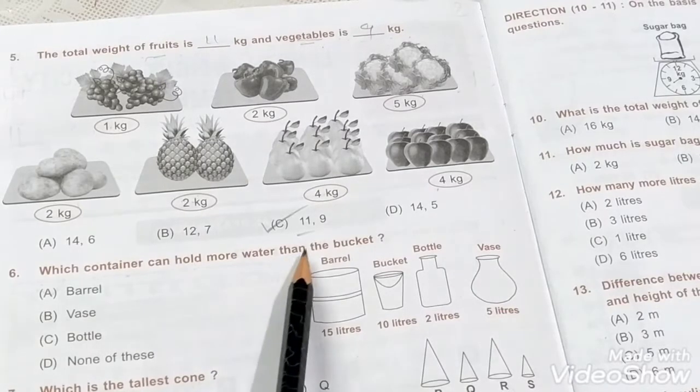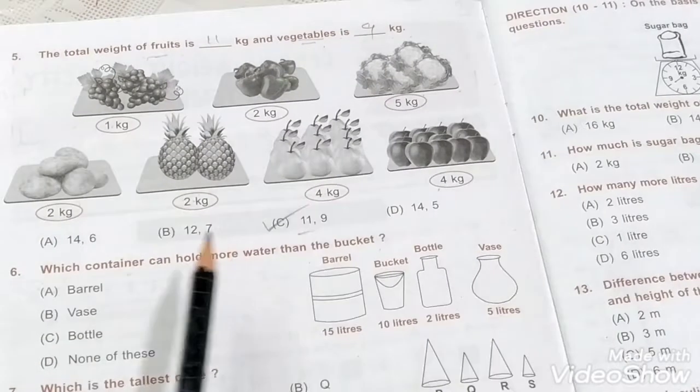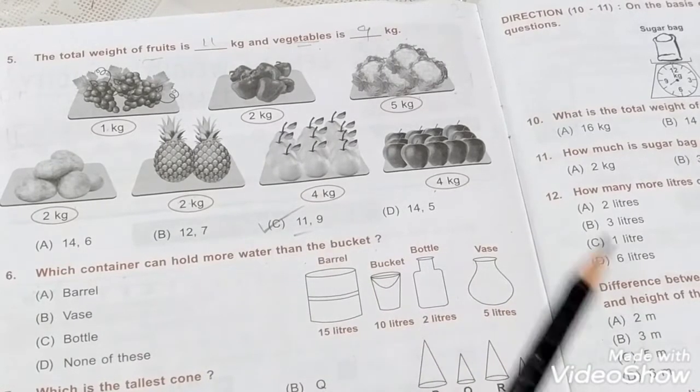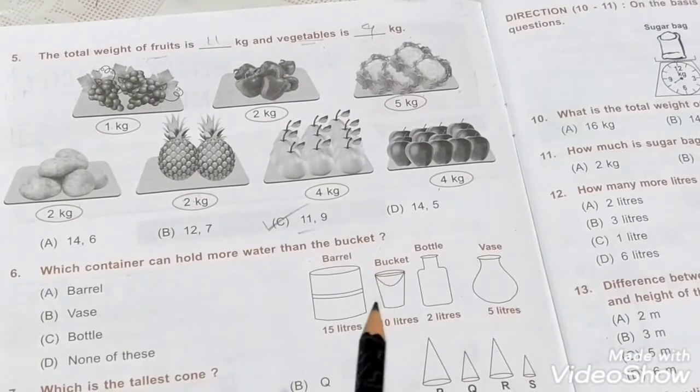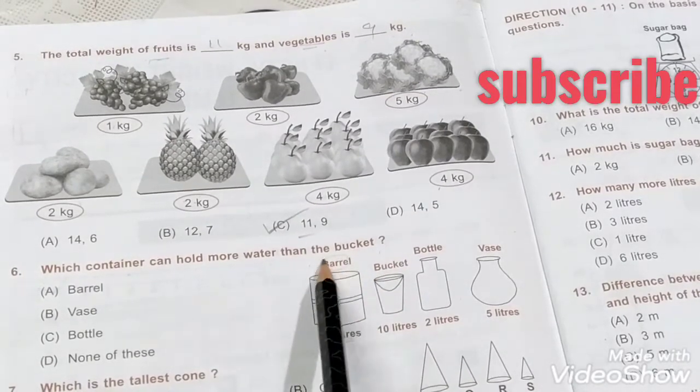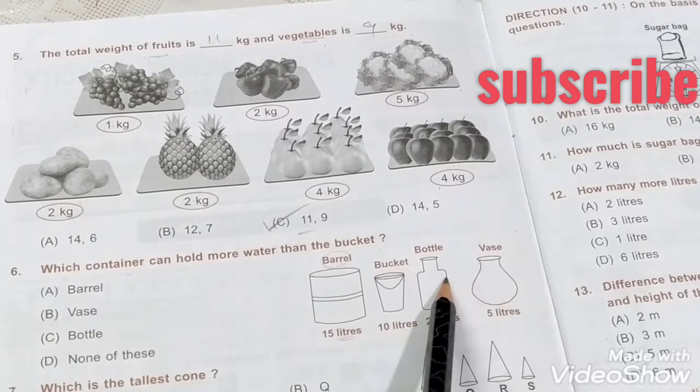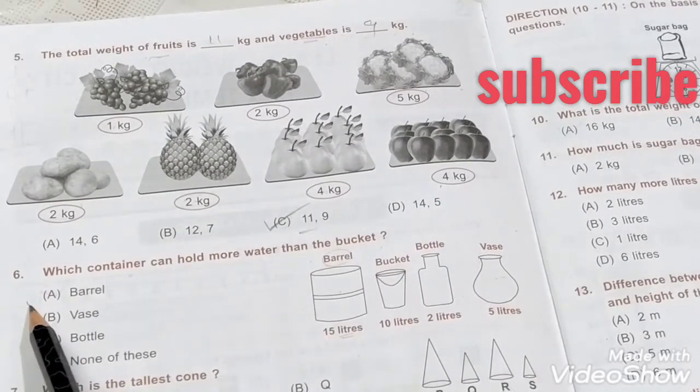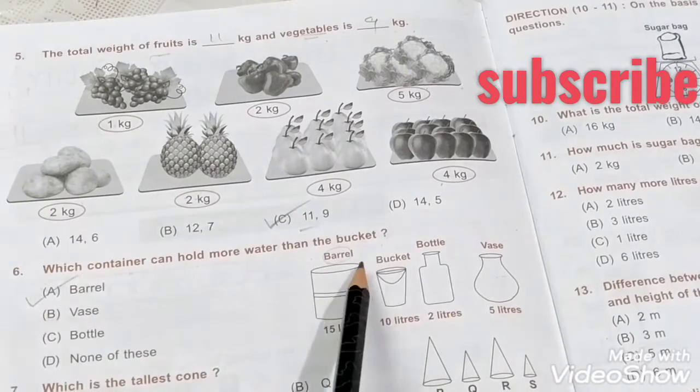Next one: which container can hold more water than the bucket? So which one has more liters capacity? This is a barrel. Comparatively, barrel is bigger than vessel, bottle, or bucket. So A, barrel, is the correct answer.